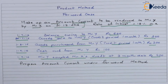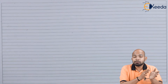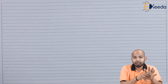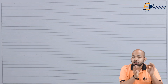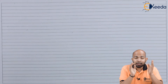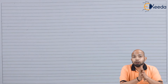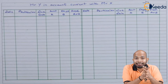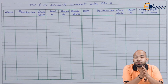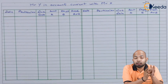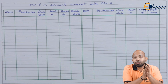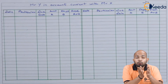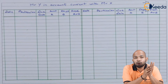We have to prepare an account current using the forward method scenario. As this is referred to the product method, the interest method will be removed from the scenario — we use the product method concept itself. Only the days calculation is really important here. Wherever the due date isn't specifically mentioned, like where only a credit period is given, take the transaction date as the due date.